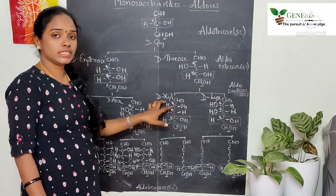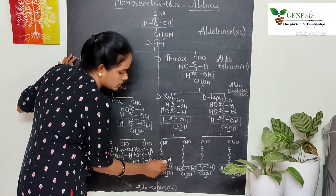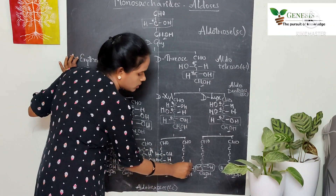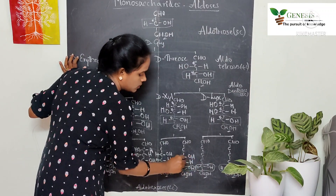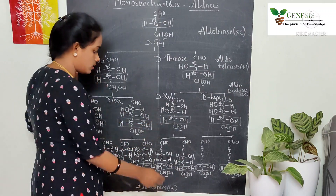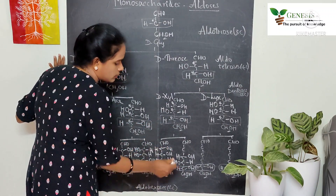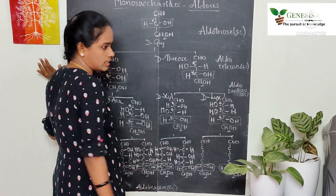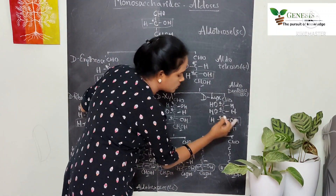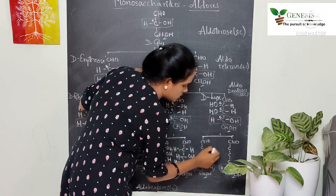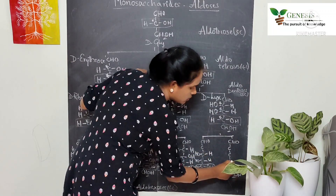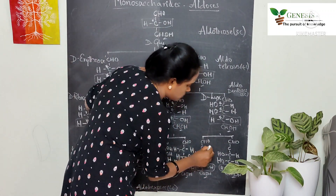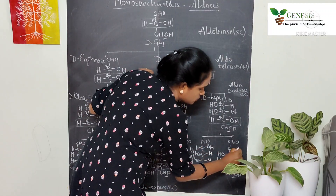The next two aldohexoses are derivatives of D-xylose. For these: H on the right, OH on the left for the farthest inherited carbons. Then OH on the right and H on the left. For the remaining free chiral center, the first compound has OH on the right and H on the left, and the second has H on the right and OH on the left. The final two are also derived from D-lyxose with H on the right, OH on the left pattern.